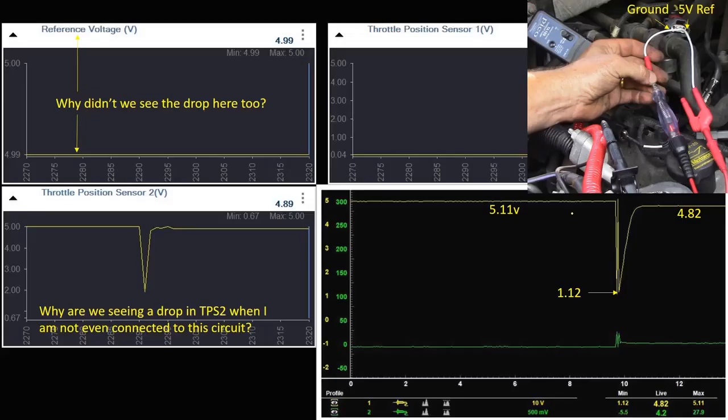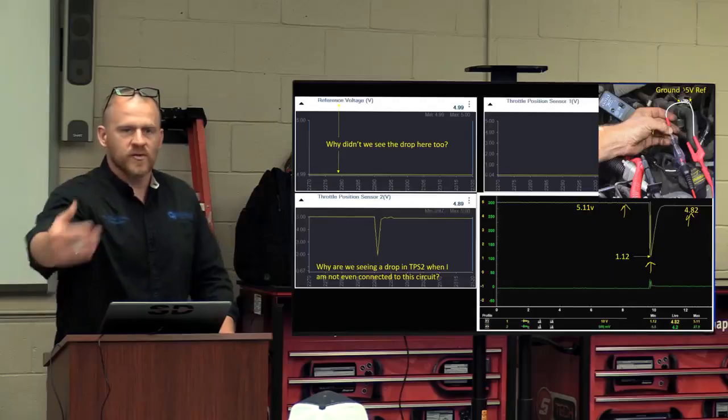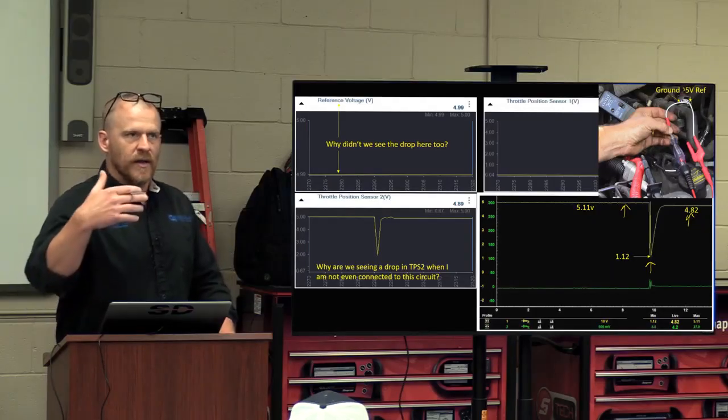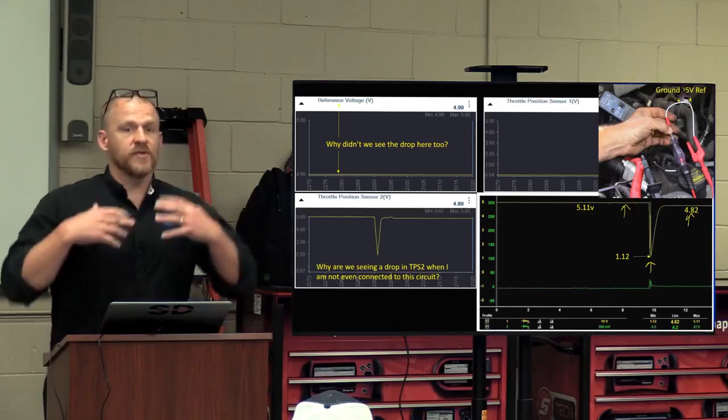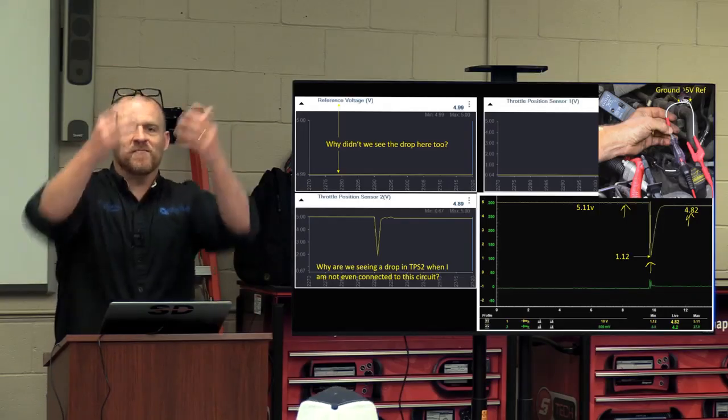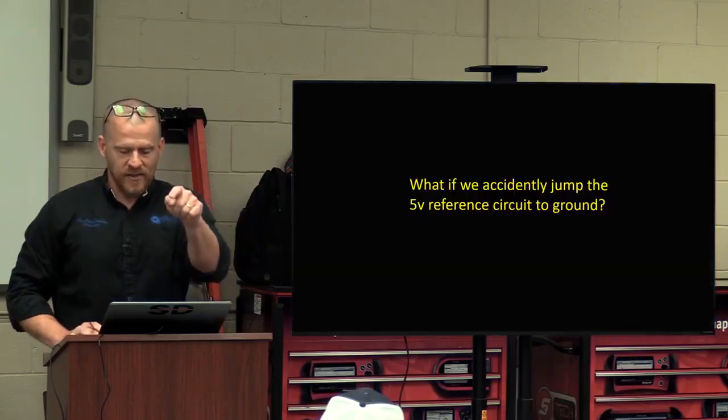So it went from five volts down to 1.12 back up to 4.8. So what does a regulator do when it has more current flow? It senses the drop and produces more current flow to bring the voltage back up.